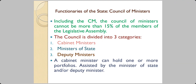The council of ministers, including the chief minister, cannot be more than 15% of the members of the Legislative Assembly. So if the number of MLAs is 100, the council of ministers cannot be more than 15. The council of ministers is divided into three categories: cabinet ministers, ministers of state, and deputy ministers. A cabinet minister can hold one or more portfolios and is assisted by the minister of state and/or the deputy minister.